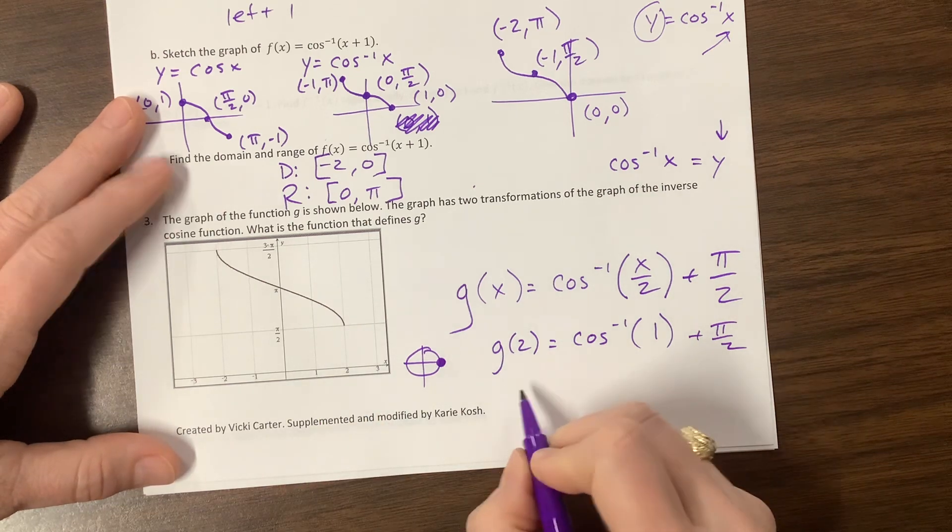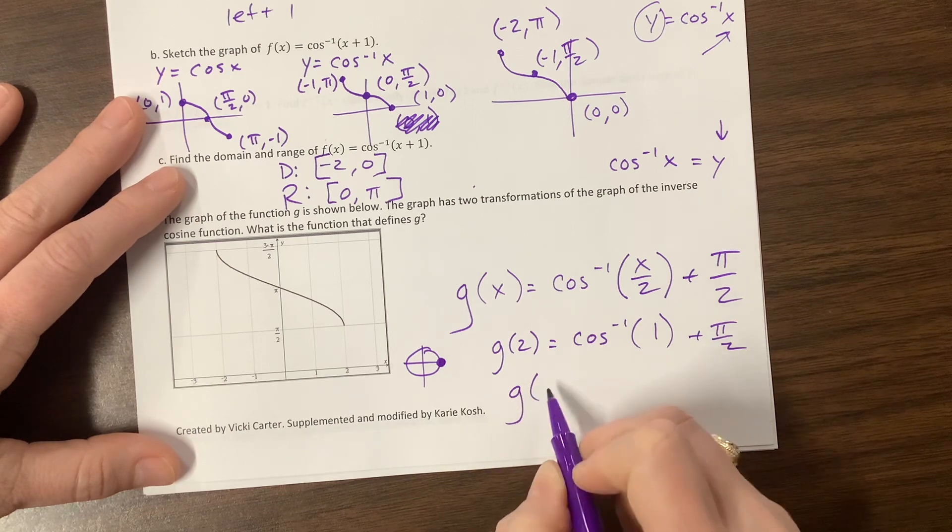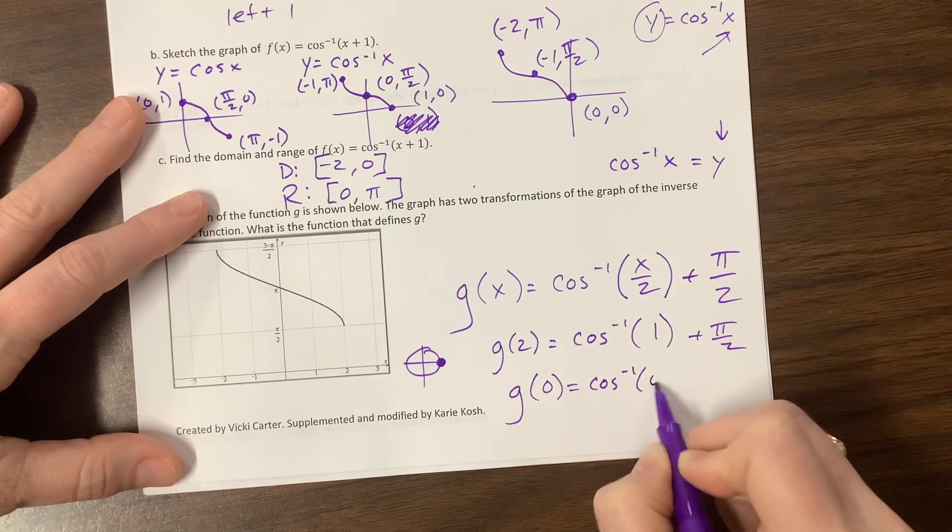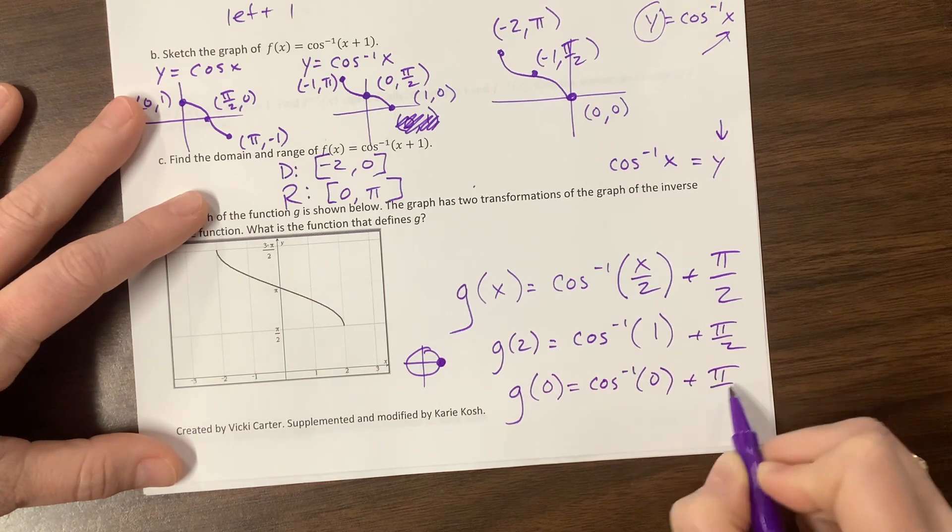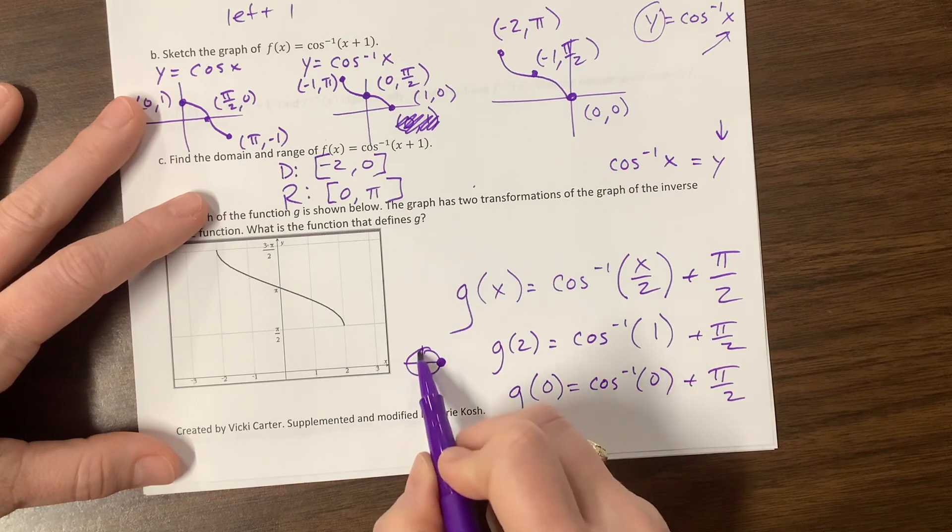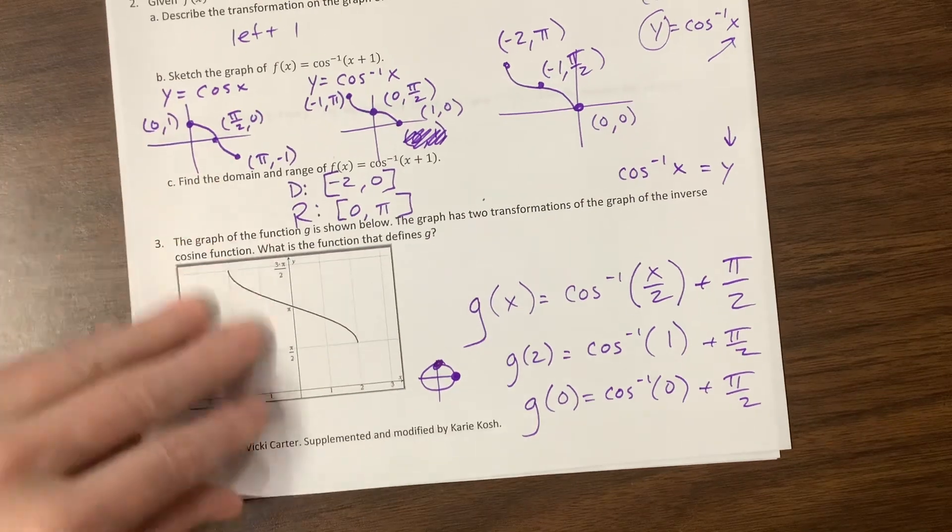Okay, that tells me, just for grins, let's just try another one. Let's try, well, 0. Okay, so cosine to the negative one of 0 plus pi over 2. Cosine to the negative, cosine, we have a cosine value of 0 at pi over 2. So pi over 2 plus pi over 2 is pi. I'm feeling pretty comfortable with my answer.